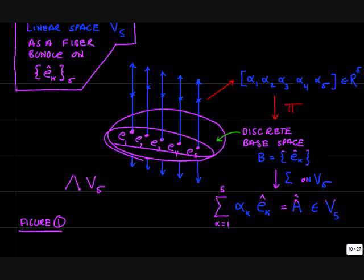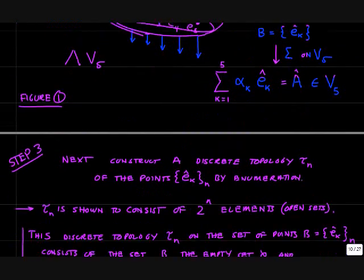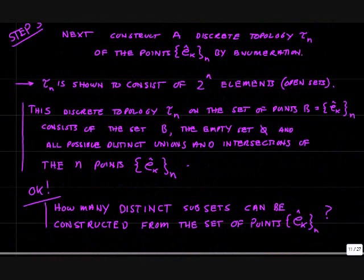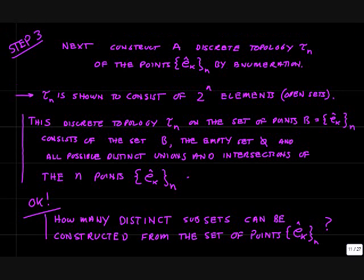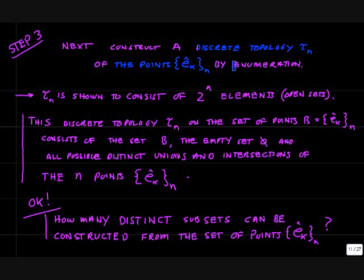How do we get the topology? You may be wondering why we're going to all this trouble to get the topology. Well, it's going to turn out to be quite useful. So let's go ahead and construct a discrete topology. I'm going to call it τn on the points Ek, and we're going to do this by enumerating the elements of the topology.